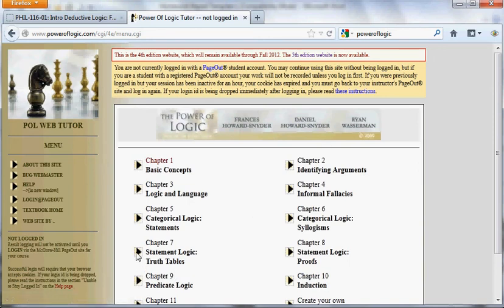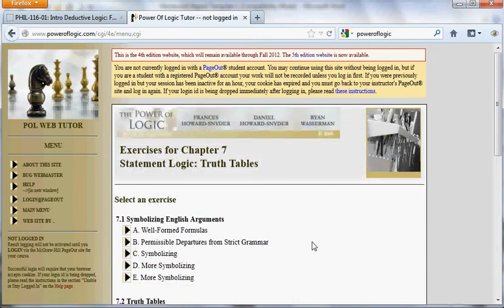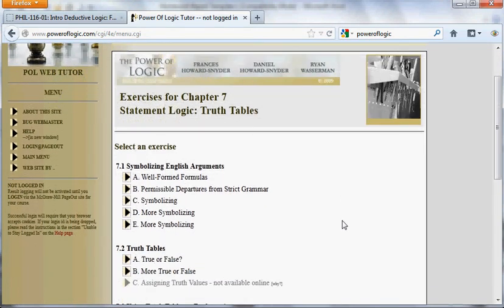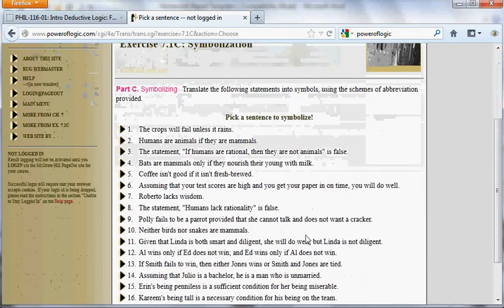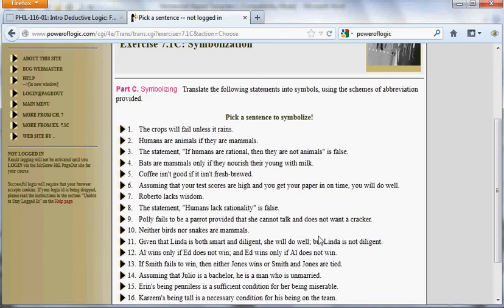Soon, we'll be getting into formal or symbolic logic, a system of logic that we're going to call statement logic, chapter seven of the textbook. It will be the second chapter that we do. And, you know, maybe I'll select 7.1 part C. And here's some English sentences that I'm supposed to symbolize into statement logic. Maybe I'll try this one. Coffee isn't good if it isn't fresh brewed.